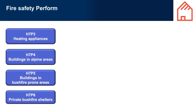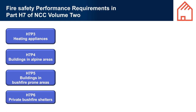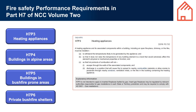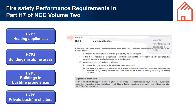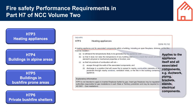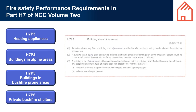Fire Safety Performance Requirements in Part H7 of NCC Volume 2. H7 P3 - Heating Appliances. A Tasmania-only variation applies. This applies to the heating appliance itself and all associated components, for example ductwork, piping, brackets, stands and electrical components.